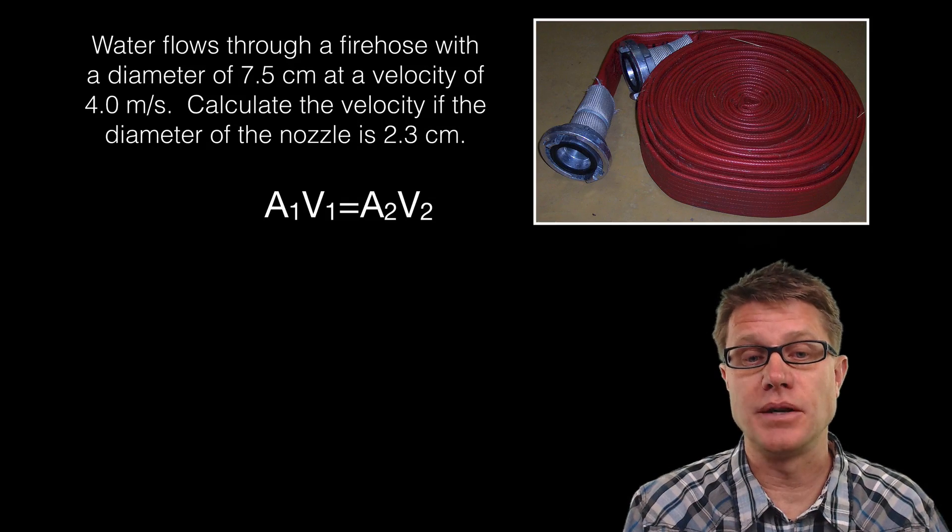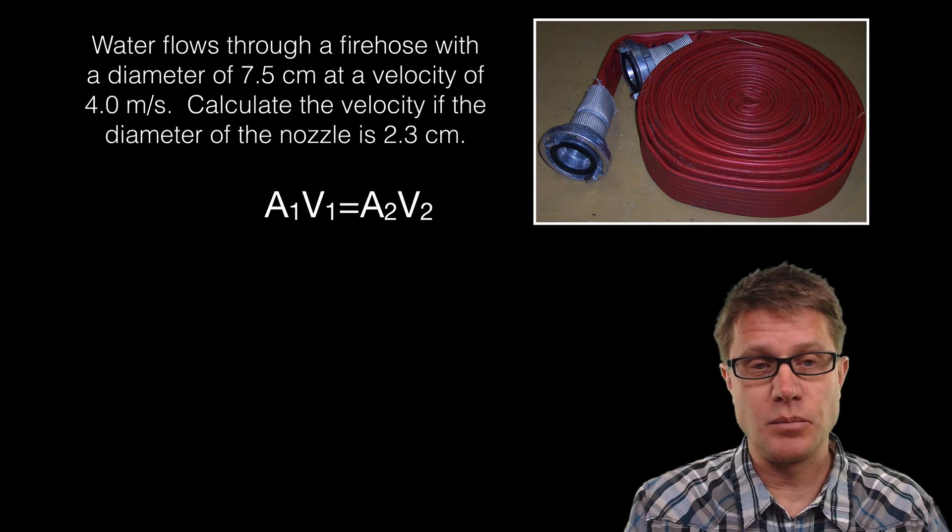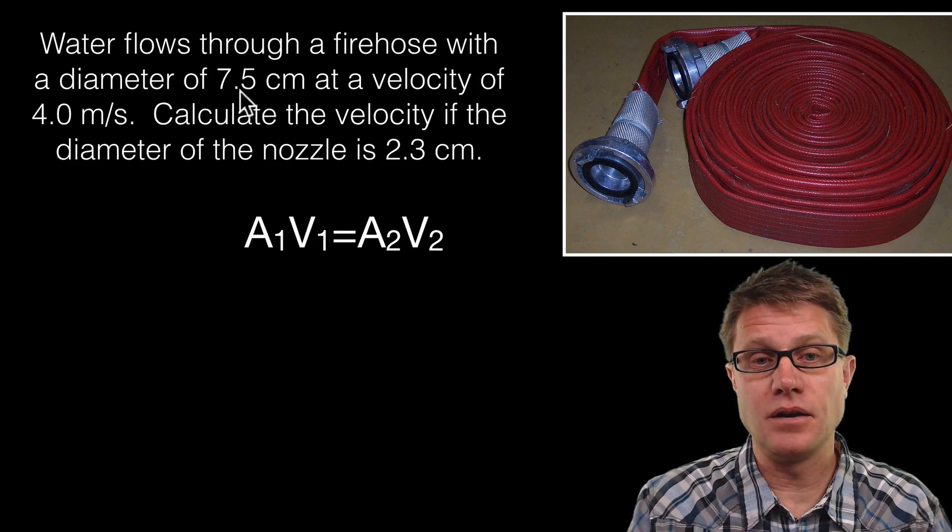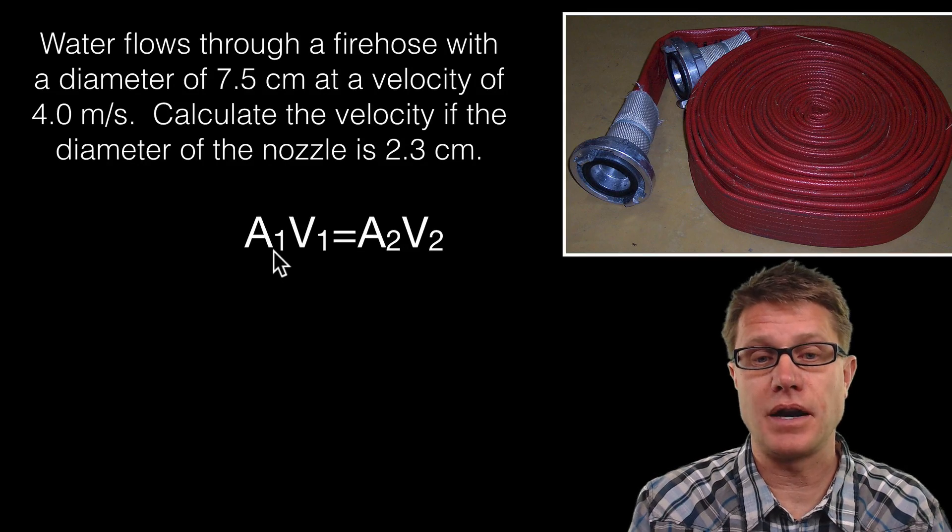And so we are going to use the continuity equation: A1V1 equals A2V2. What is going to be my area? Well I know my diameter here, but that does not give me the area. I am going to have to use a little geometry to figure that out.